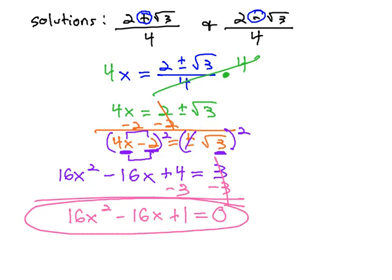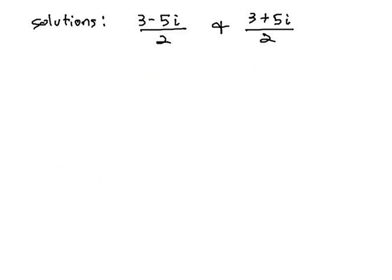Let's try another example where we do this exact same process, but this time with complex numbers. Again, we're going to make x equal to this stuff with the minus and plus being shorthanded. So in this case, we have 3 plus or minus 5i over 2.